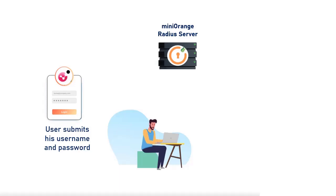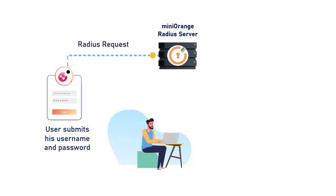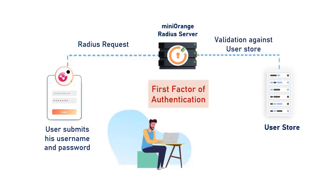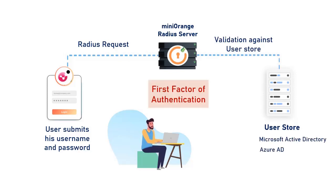User submits his username and password, which is accepted by the MiniOrange Radius server as a Radius request. The user can be validated against any user directory like Microsoft Active Directory, Azure AD, OpenLDAP, or you can keep users in the MiniOrange user directory as well.